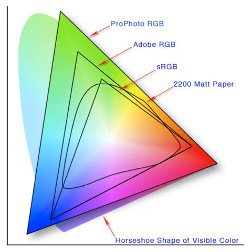Since color space identifies a particular combination of the color model and the mapping function, the word is often used informally to identify a color model. However, even though identifying a color space automatically identifies the associated color model, such a usage is incorrect in a strict sense. For example, although several specific color spaces are based on the RGB color model, there is no such thing as the singular RGB color space.